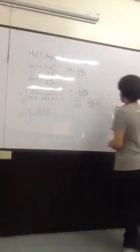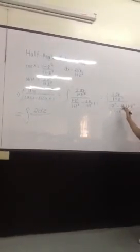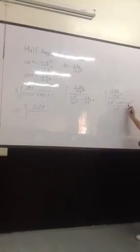Negative Z squared minus Z squared. And then 1 plus 1, 2.